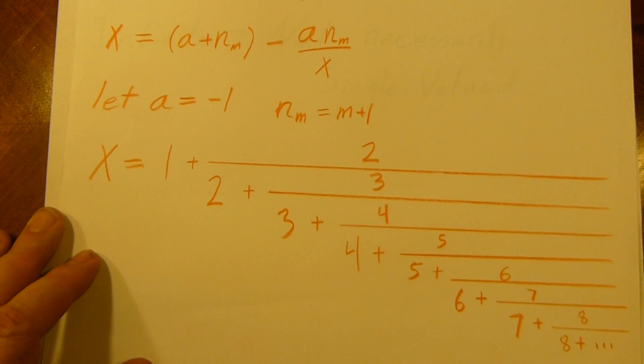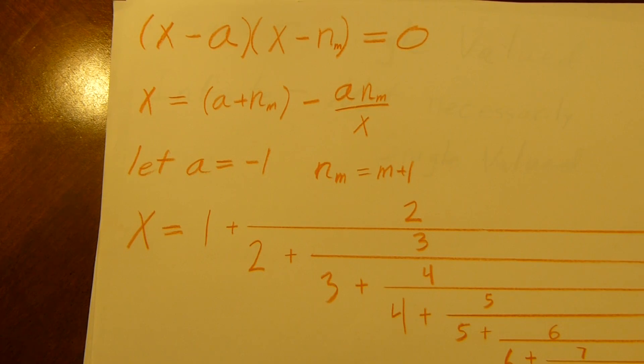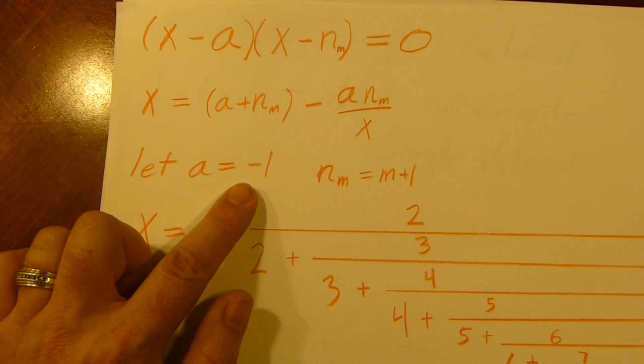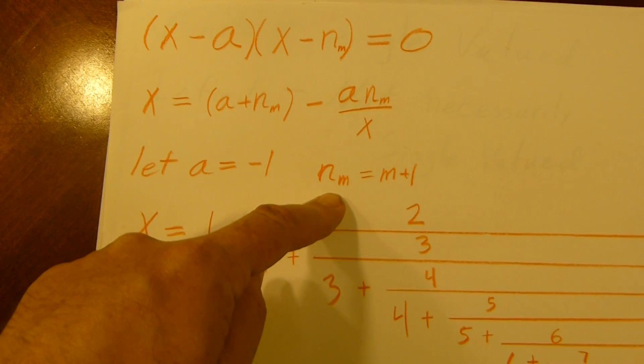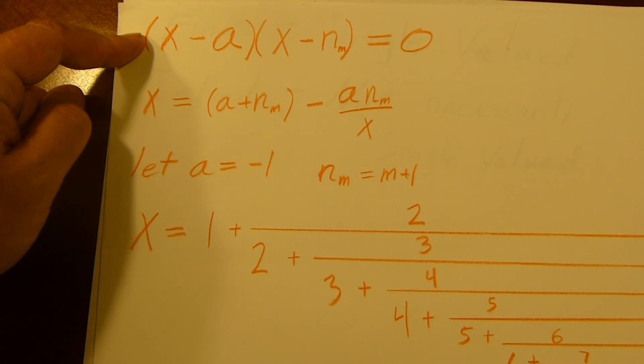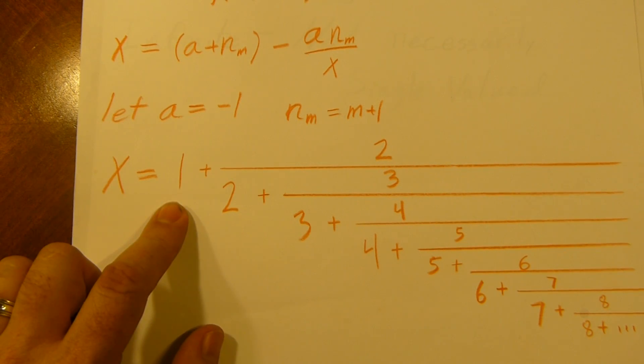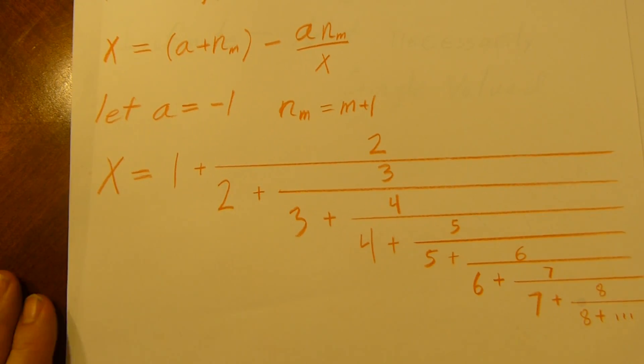Now this one's going to be a little bit more screwy. Let's start with (x - a)(x - n_m) equals 0. So we solved this as before. x equals a + n_m - a·n_m over x. Let's just fix a. So a is going to be negative 1. Then we'll let n change. Because why not? I mean, no matter what happens, a will be an answer, right? So I'm going to plug this in. And let x become 1 plus 2 over 2 plus 3 over 3 plus 4 over... Very pretty. Very nice. We saw this earlier, though.